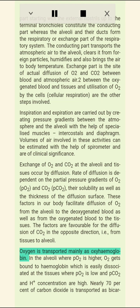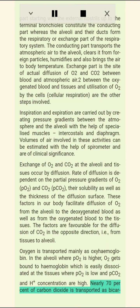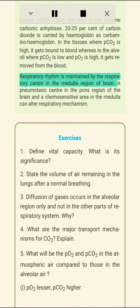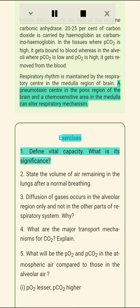Oxygen is transported mainly as oxyhemoglobin. In the alveoli, where pO2 is higher, O2 gets bound to hemoglobin, which is easily dissociated at the tissues where pO2 is low and pCO2 and H⁺ concentration are high. Nearly 70 percent of CO2 is transported as bicarbonate (HCO3⁻) with the help of the enzyme carbonic anhydrase; 20–25 percent is carried as carbaminohemoglobin. In the tissues where pCO2 is high it gets bound to blood, whereas in the alveoli where pCO2 is low and pO2 is high it is removed. Respiratory rhythm is maintained by the respiratory center in the medulla, the pneumotaxic center in the pons, and a chemosensitive area in the medulla.